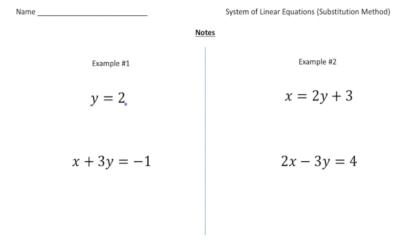Here we have y equals 2 and then x plus 3y equals negative 1. Now you might be wondering when do you ever use the substitution method? When you know a clear number that a variable represents, that's when you want to use it. So here we know y equals 2. I can take this 2 and substitute it in for this y right here — that's going to be a 2.